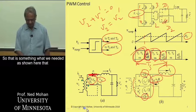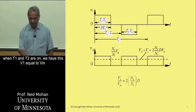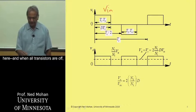So that is something what we needed, as shown here, that when T1 and T2 are on, we have this V1 equal to VN here, and when all transistors are off, 0,